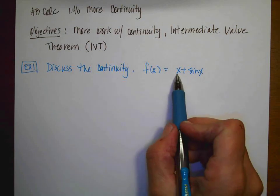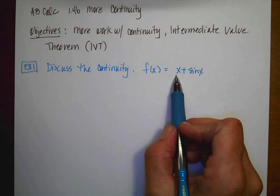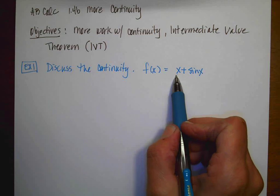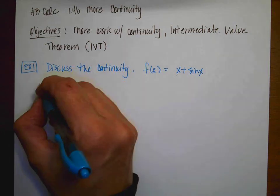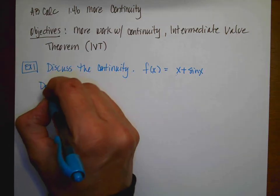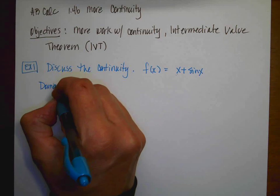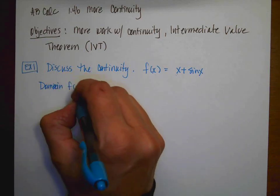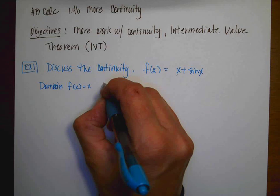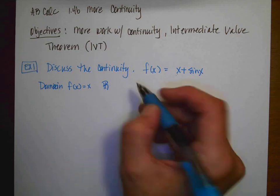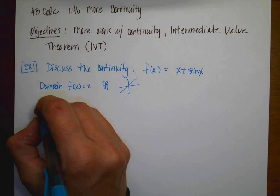Remember, back from pre-calc, if I have a function that is a composition of two functions, then the domain of the composition is where those two overlap. So let's look at the domain of f(x) = x. Well, this one is all real numbers, because that's just the cute little line that goes like that.